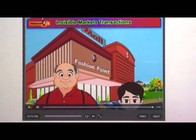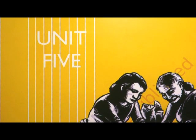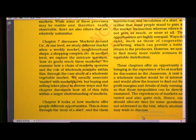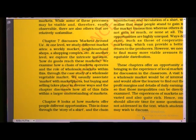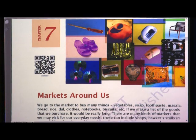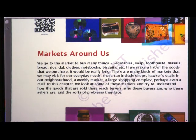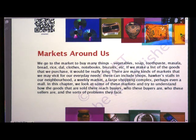Okay children, you saw the video. The title of the lesson is 'Markets Around Us.' Now open your textbook. It's a very simple lesson and the language is also very simple. We go to the market to buy many things: vegetables, soap, toothpaste, masala, bread, rice, dal, clothes, notebooks, biscuits, etc. If we make a list of the goods that we purchase, it would be really long.